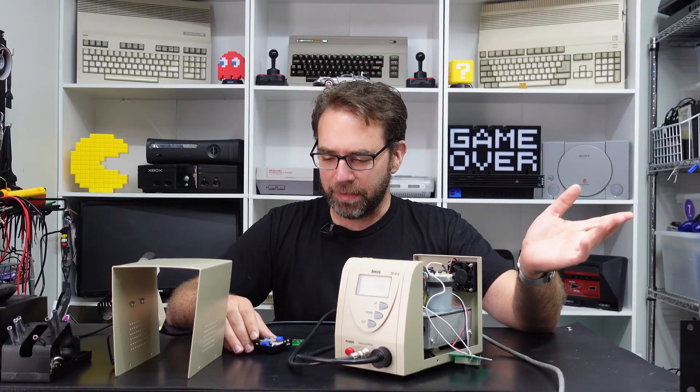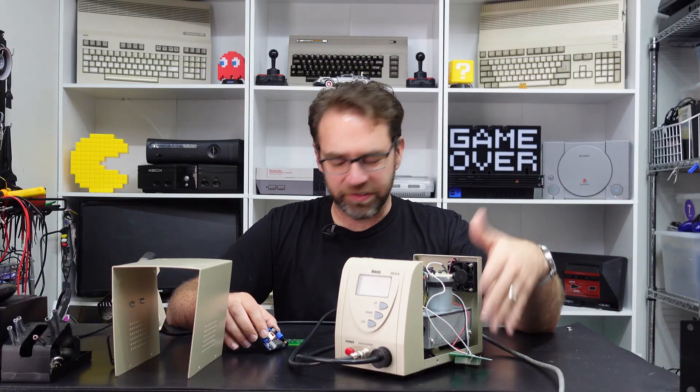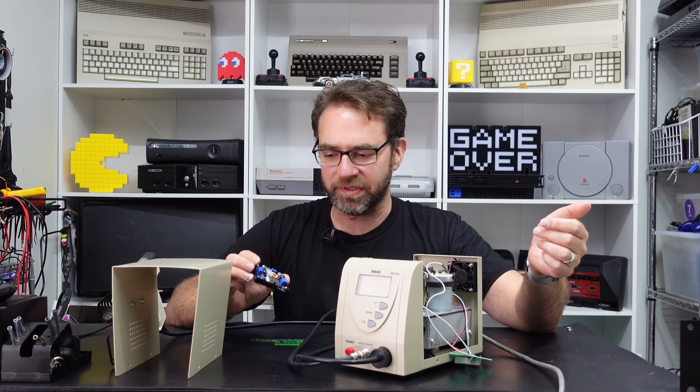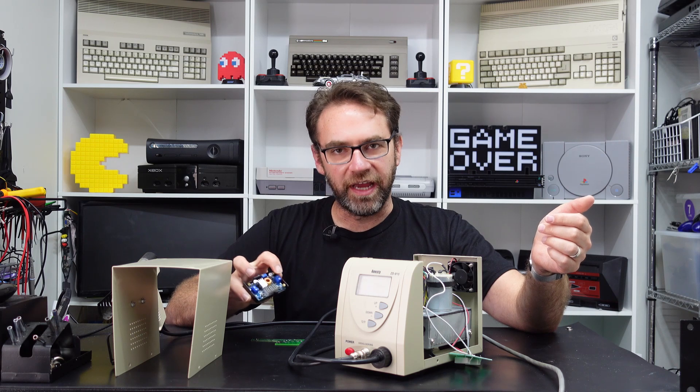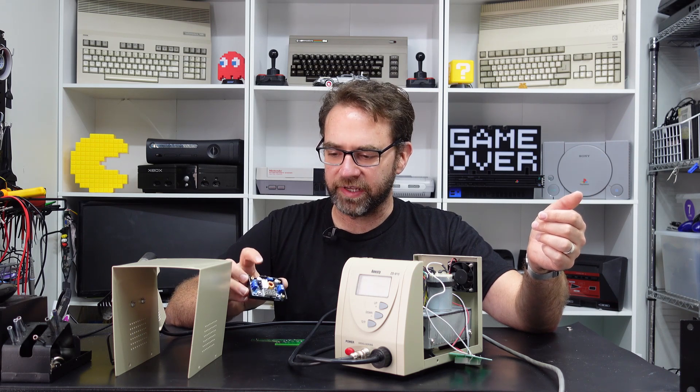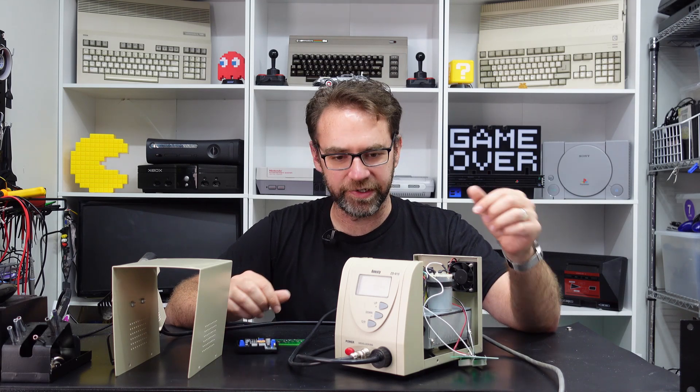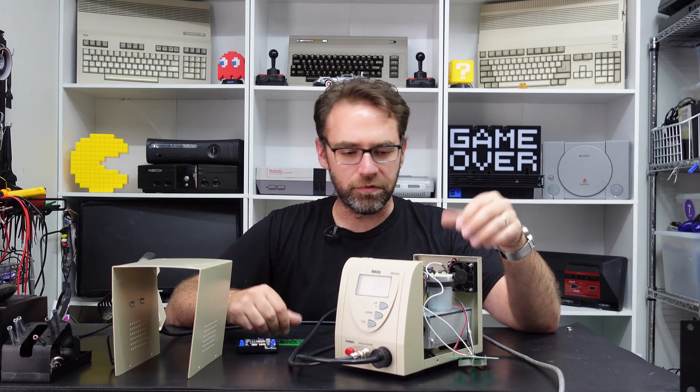So like I said what a couple of people have done is replaced these dropper resistors with a little buck converter, so it takes in 18 volts and converts it to 12 volts a lot more efficiently than just a couple of massive resistors, and it runs a lot cooler.